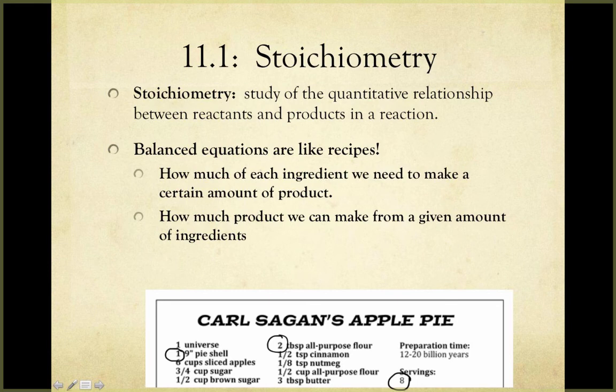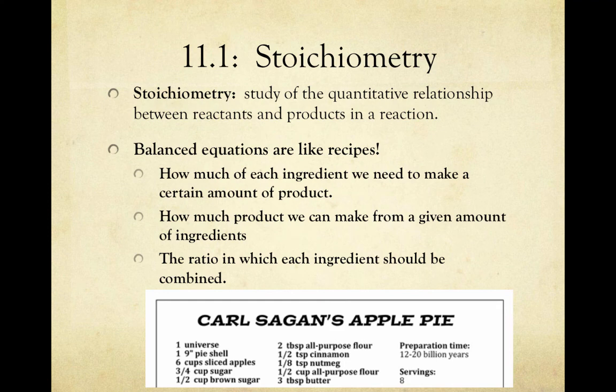It also tells us how much product we can make from a given amount of ingredients. Imagine I had twice as much of all this stuff. That means I could make twice as much pie, or sixteen servings of apple pie. And finally, it tells us the ratio in which each ingredient should be combined.